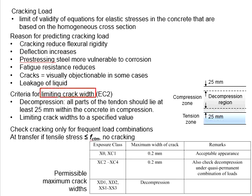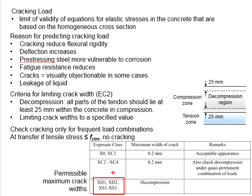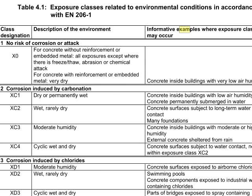Another method of limiting crack width is to limit it to a specified value, which according to Eurocode is 0.2, 0.3, and 0.4 mm. For pre-stressed members, depending on the exposure class, the criteria for limiting crack width are 0.2 mm for classes X0, XC1, XC2 to XC4. For other exposure classes, you must ensure your tendons fall within the decompression region. For the description of exposure classes, you may refer to Table 4.1 in Eurocode 2, Part 1.